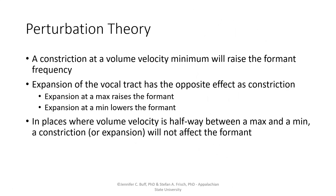If we have a constriction at a volume velocity minimum, we end up with raising of a formant frequency rather than lowering it — so the volume velocity maximum and minimum, or the antinode and node positions, have opposite effects on formant frequencies. It's also the case that expansion of the vocal tract has the opposite effect as a constriction: expanding at a maximum raises the formant, and expanding at a minimum lowers it. At locations where the volume velocity is halfway between a maximum and a minimum, a change in articulation will basically not affect the formant.